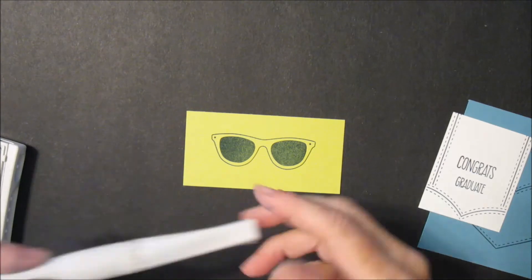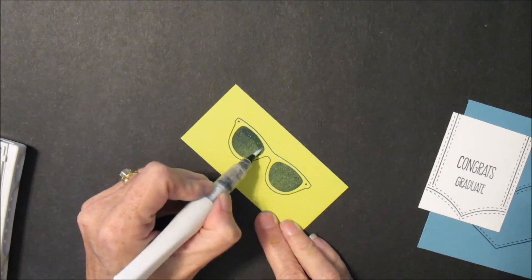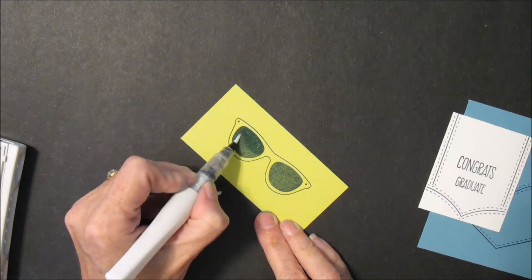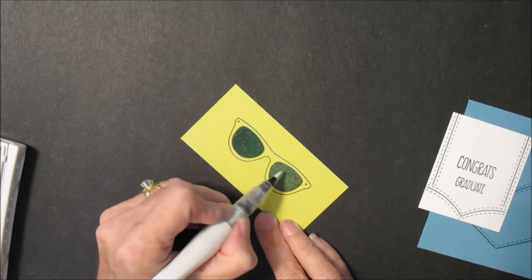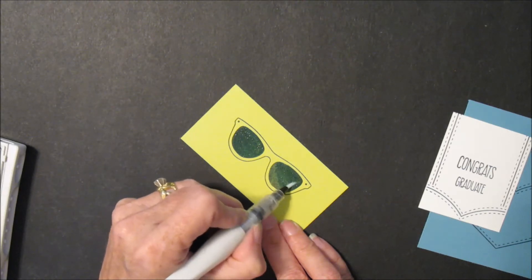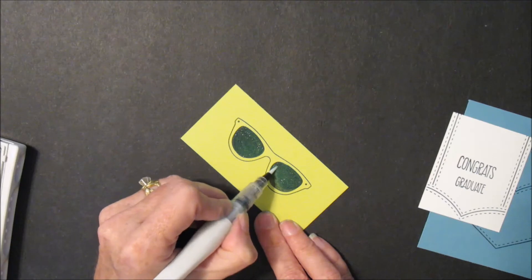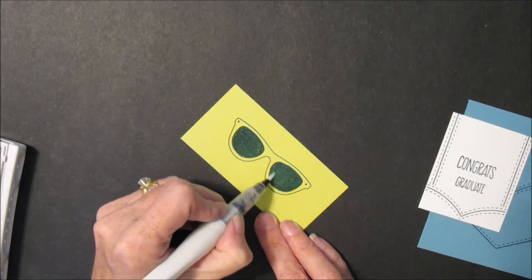And I actually took my Wink of Stella and kind of gave it a little bit of a sheen and glittery look to the glasses. We'll do that real quick. And it helps also smooth out that ink on there, so I actually really like the way it looks.